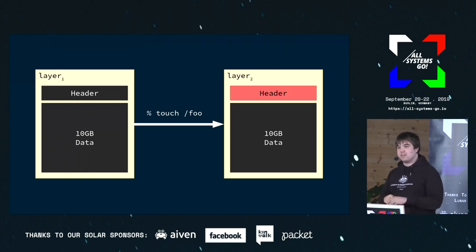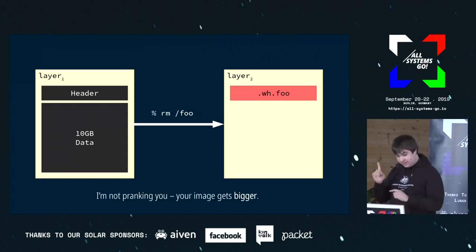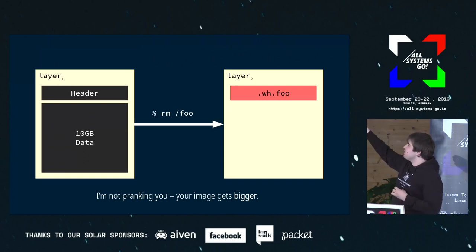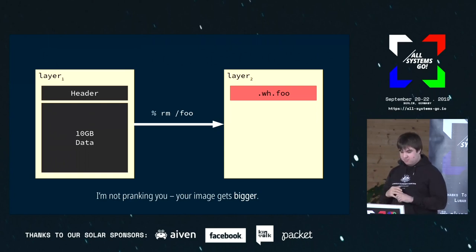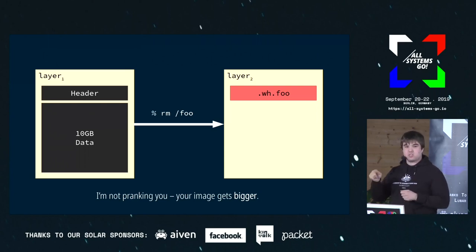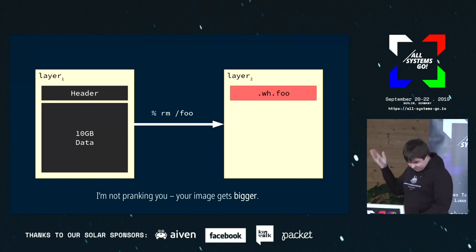If you delete a file, you don't modify the original layer — that would be bad. Instead, you put a tombstone in the new layer. This means if you delete a file in a container image, not only does the image not get smaller, it actually gets bigger — by the size of a tar archive header. And this means you can't create a file called .wh.anything inside an OCI or Docker image. Try it after the talk: run Docker, touch .wh.foo, commit the image, then run it again — your file will have disappeared. It's not supported.